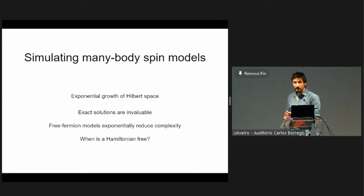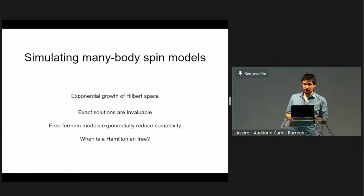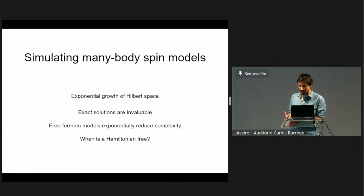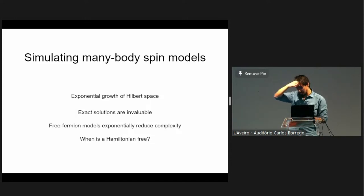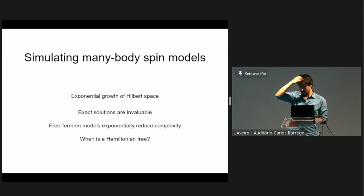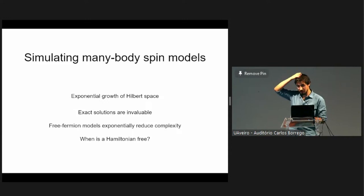So the question you might want to ask is: when is a Hamiltonian free, in the sense that when does a Hamiltonian admit a solution by mapping to free fermions? That's the question we wanted to ask in this work. I'll give some background, explain what I mean with equations and pictures, then give the criteria.